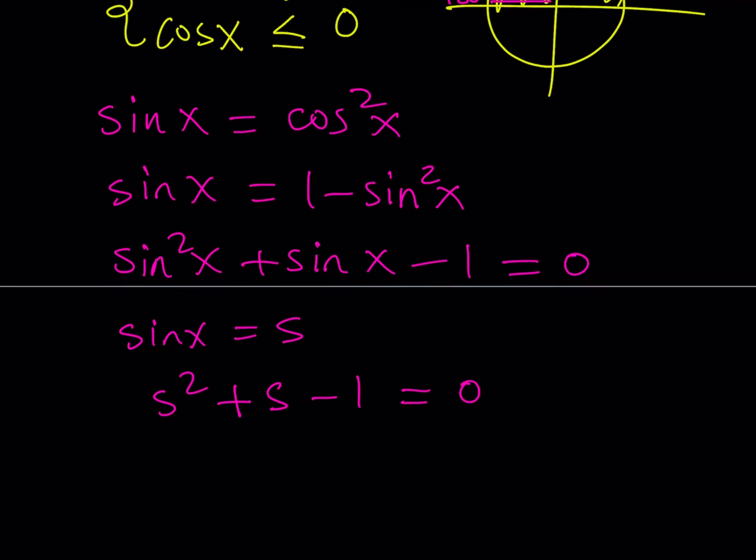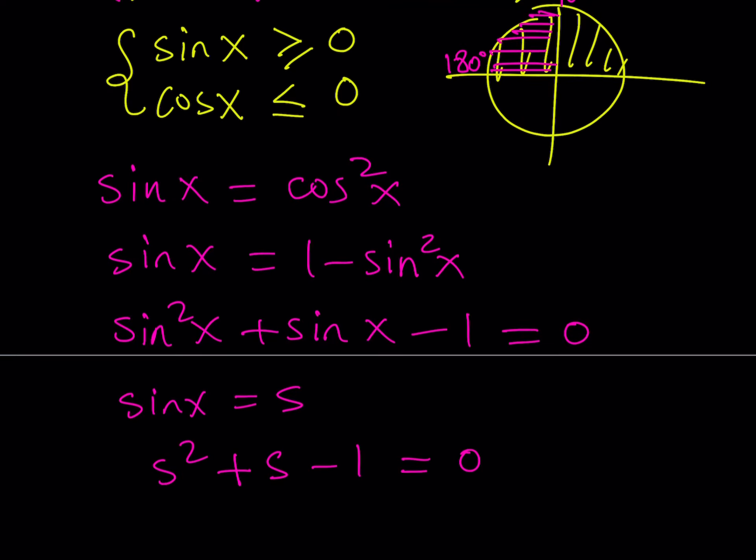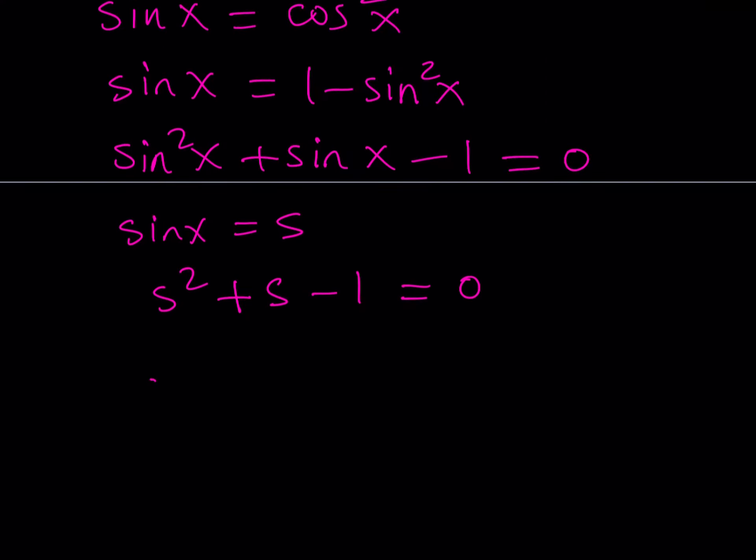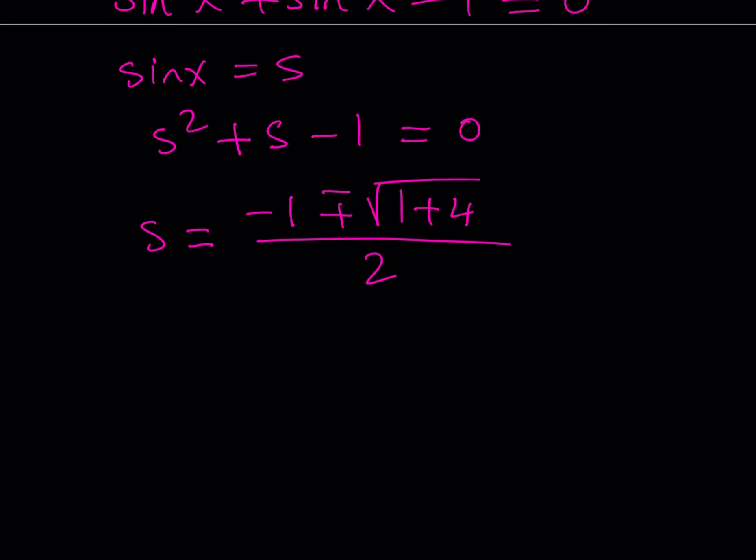As you know sine x needs to be positive so we're only going to be looking at the positive solutions. Let's solve it using the quadratic formula. This is going to give me negative b plus minus the square root of b squared which is 1 minus 4ac.